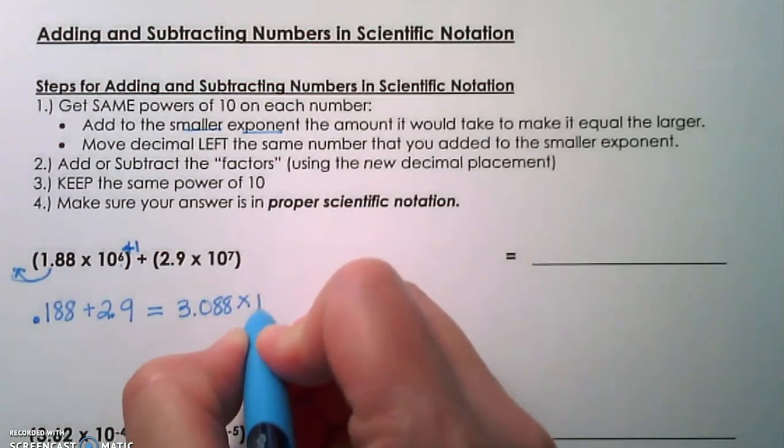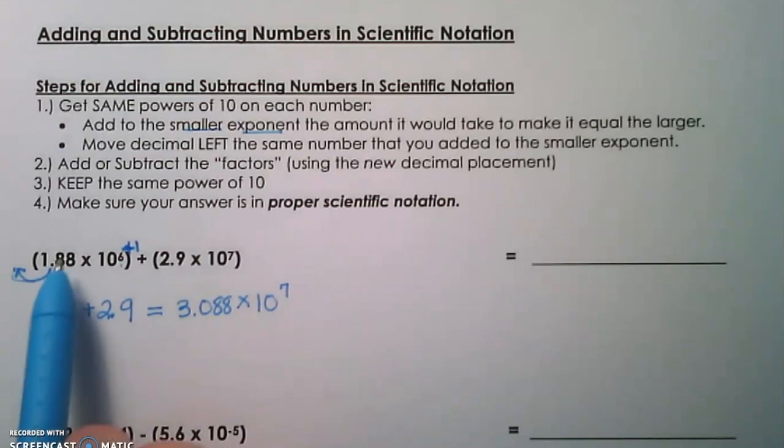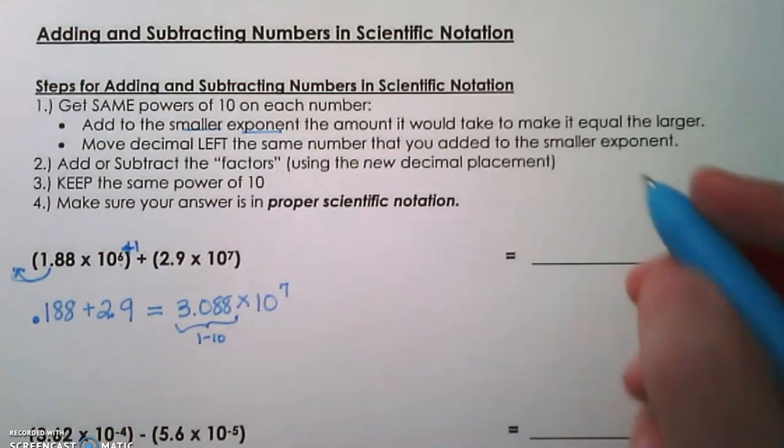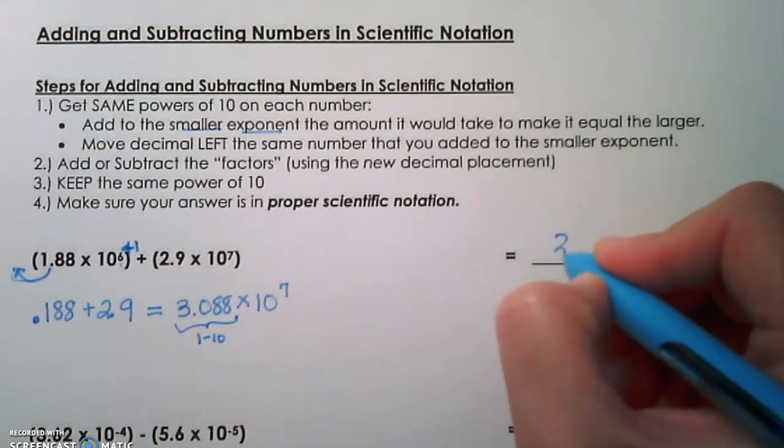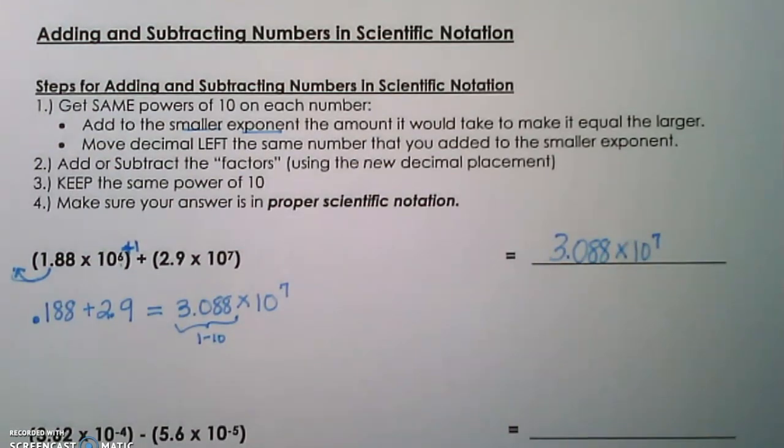So it's going to be times 10 to the new exponent, because both of them are now 10 to the seventh power. And then make sure our answer's in proper scientific notation. So we check this factor. Is it between 1 and 10? Yes, it is. 3.088 is between 1 and 10. Times 10 to the seventh power. That would be our answer.